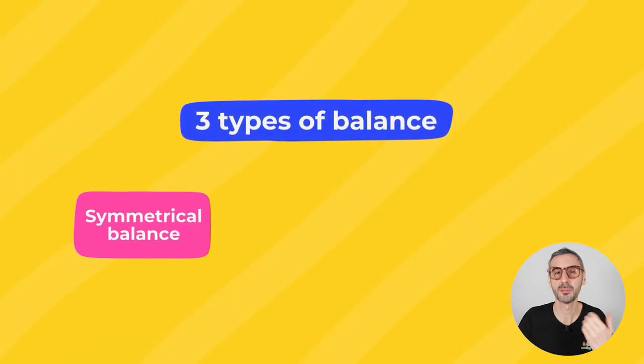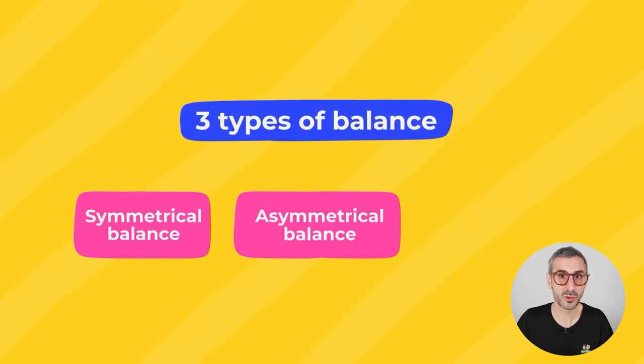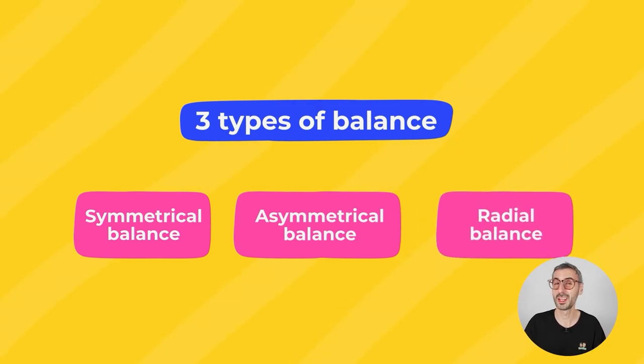Now that we know what visual balance is and why it's important, let's look at how we can create it. When researching balance, I found three main types: the first is symmetrical balance, the second is asymmetrical balance, and the third is radial balance. I'm going to jump into each one, explain what they are, show examples, and highlight how they differ. Let's start with symmetrical balance.